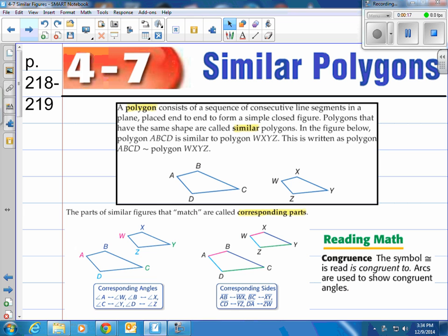Similar polygons. What are polygons? A polygon consists of a sequence of consecutive line segments in a plane placed end-to-end to form a simple closed figure. You can see they used quadrilaterals here. You can have triangles, pentagons, and so forth. Polygons that have the same shape are called similar polygons.